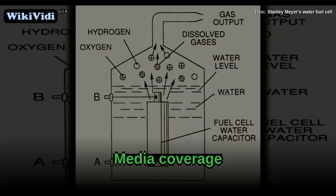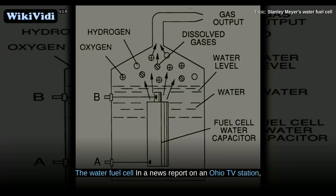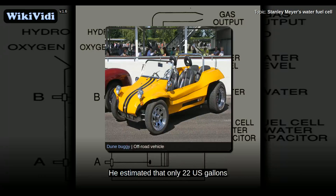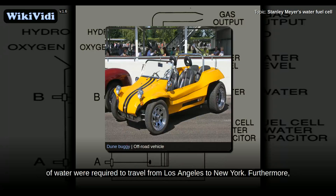Media coverage. The water fuel cell in a news report on an Ohio TV station. Meyer demonstrated a dune buggy he claimed was powered by his water fuel cell. He estimated that only 22 U.S. gallons of water were required to travel from Los Angeles to New York.